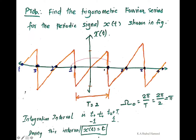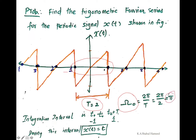We are going to consider only one portion of the signal, starting from minus 1 to plus 1, and the time period T is equal to 2. Time period T equal to 2 means the angular frequency omega naught is equal to 2π divided by capital T, which is equal to π. The angular frequency is π.